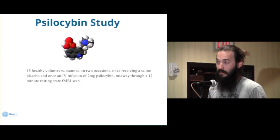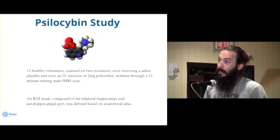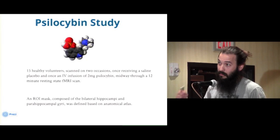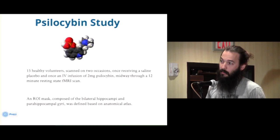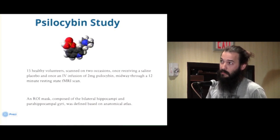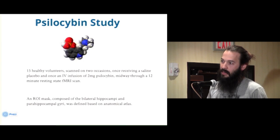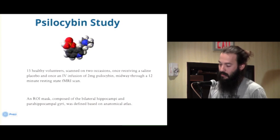Once scanned before and after psilocybin and during placebo, we created a mask — the region of interest — composed of bilateral hippocampi and the parahippocampal gyri, based on an anatomical atlas. So nothing was taken from the experiments themselves to generate that mask. The reason we included both bilateral hippocampi and parahippocampal gyri is because of work showing the two are strongly connected and involved together in communicating with the rest of the brain.